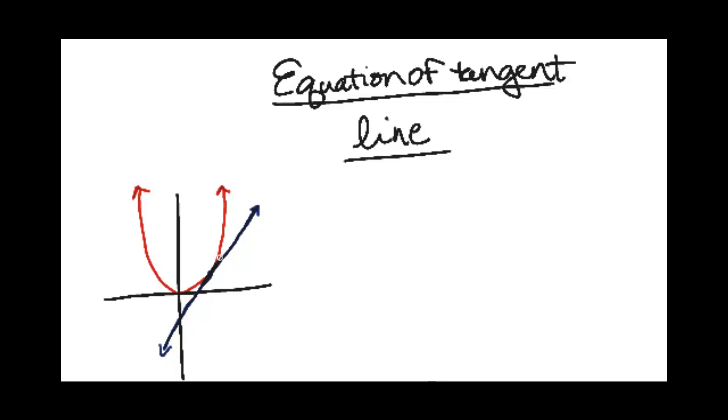But you can see that there's going to be an infinite number of these tangent lines depending on what point you pick. So what we do, that was the graph of Y equals X squared.